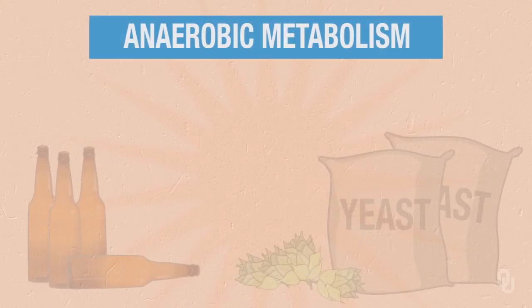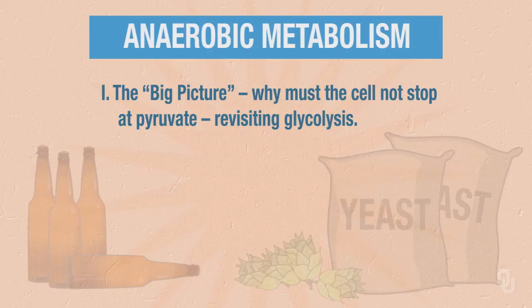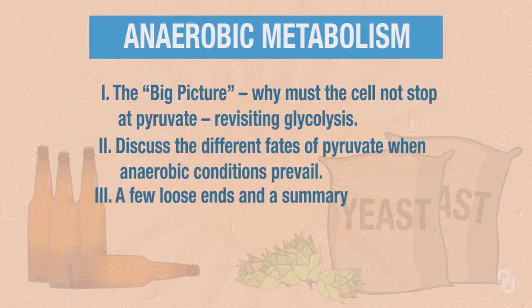Welcome to this segment of the Chemistry of Beer. The topic of this segment is anaerobic metabolism. To begin our discussion, we will first think about the big picture: why must the cell not stop at pyruvate? This will require that we revisit glycolysis. Next, we'll discuss the different fates of pyruvate when anaerobic conditions prevail, and then finally we'll wrap up some loose ends and summarize our discussion.